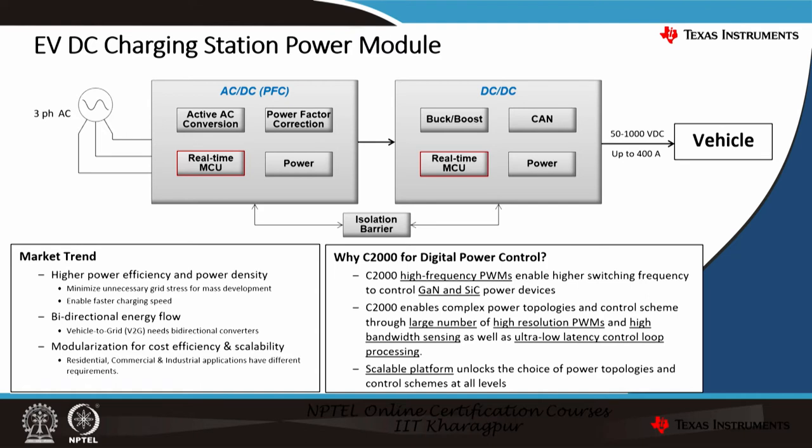There are two real-time MCUs coming into picture here: one is in the AC-DC stage and the second is in the DC-DC stage. The current market trends are highlighted in the bottom picture. The first is higher power efficiency and power density, which is needed to minimize unnecessary grid stress for mass deployment. Higher power density enables fast charging speed with the same form factor, and higher power efficiency will also reduce losses.